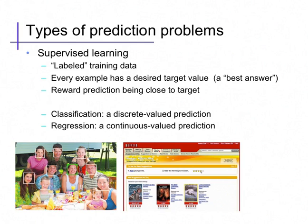Note that the discreteness is in the prediction. In Netflix, for example, you can only rate a movie 3 or 4 stars. But because Netflix can predict a real valued number like 3.8, it would be called a regression problem.